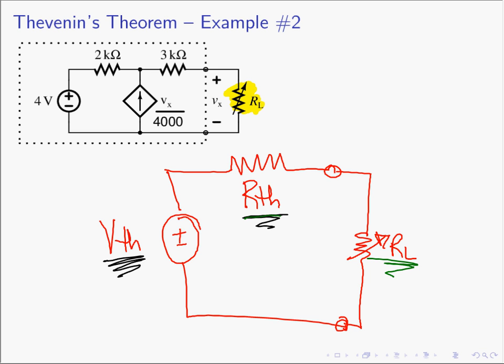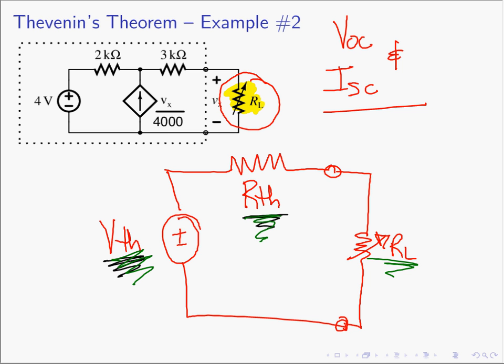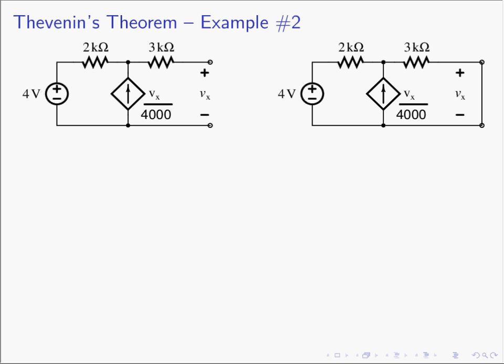Our recipe tells us we need to find VOC and ISC. Once we find these two numbers we can compute the Thevenin equivalent circuit. Let's remove R_L and find VOC. The load resistor R_L has been removed and replaced with an open circuit, and we're looking for VOC — the open circuit voltage.